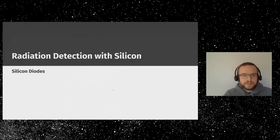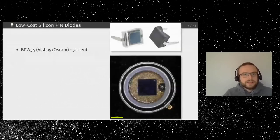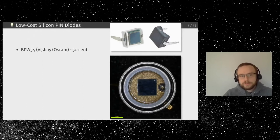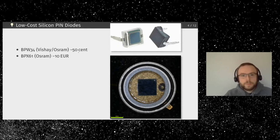The project uses low-cost silicon PIN diodes. One is called BPW34, manufactured by Vishay or Osram, costing about 50 cents. Another is called BPX61 from Osram — quite a bit more expensive, with a metal case. That metal-cased one is used for the alpha detector. If you look closely, there is a glass window on top, but it can be removed to expose the sensitive area.